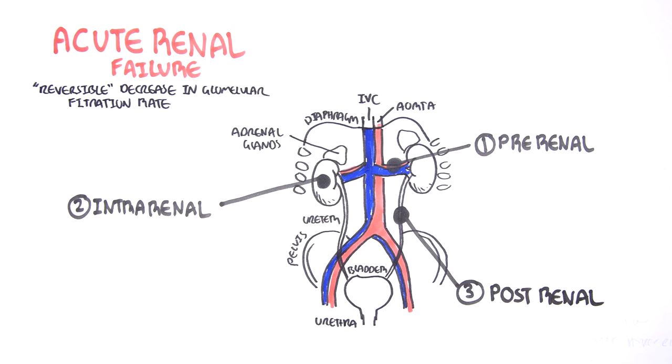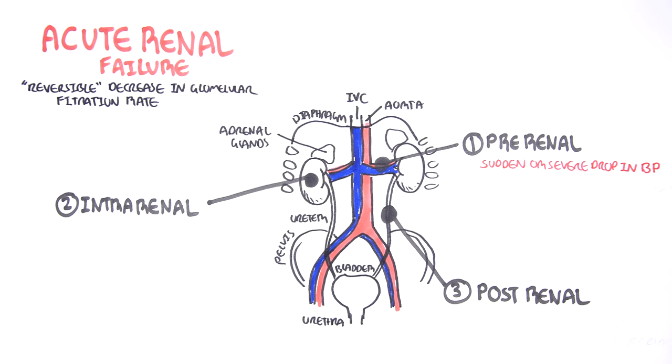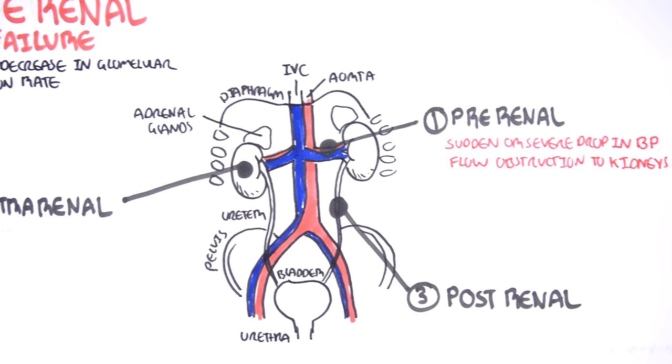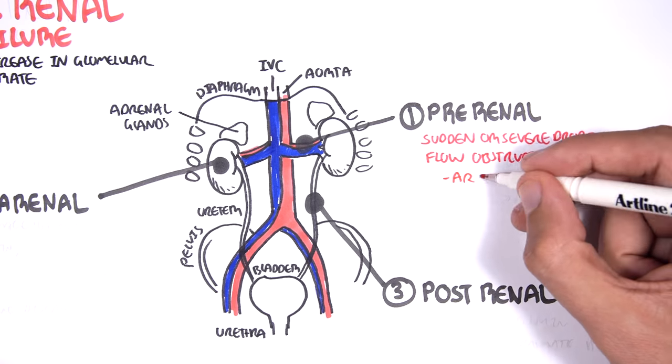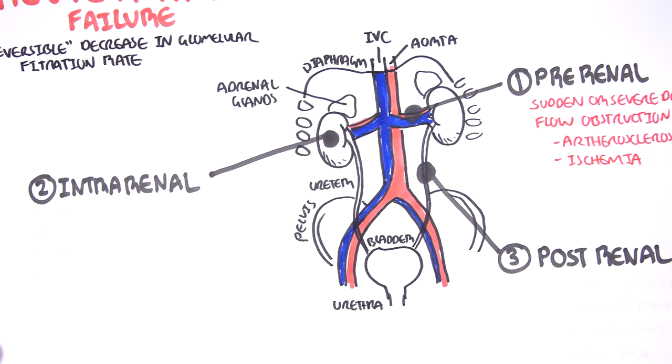Pre-renal cause of acute renal failure can be due to a sudden or severe decrease in blood pressure. Or it can be due to a flow obstruction to the kidneys. And this can be due to atherosclerosis or some form of ischemia, stenosis.